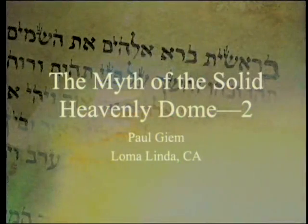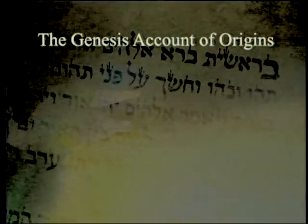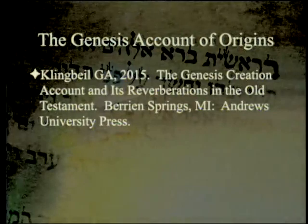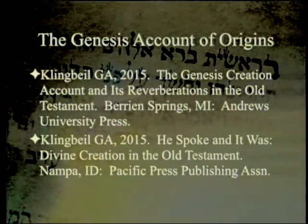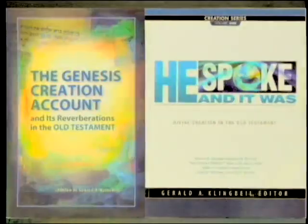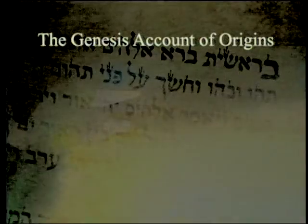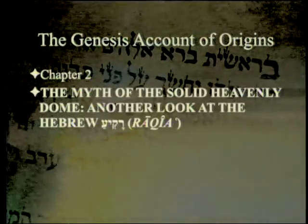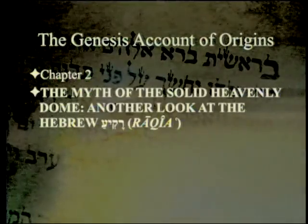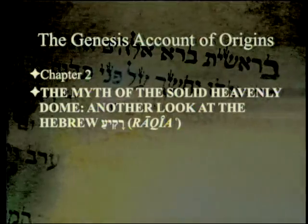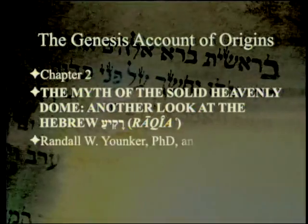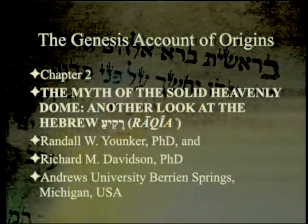The Myth of the Solid Heavenly Dome, Part 2. We've been discussing a couple of books: the Genesis creation account and its reverberations in the Old Testament, and He Spoke and It Was: Divine Creation in the Old Testament, both covering the same ground with the same authors, both edited by Gerald Klingbeil. We are now in chapter 2 — which, because we took the long way around, is going to be our last chapter. This is Part 2 of Chapter 2, 'The Myth of the Solid Heavenly Dome: Another Look at the Hebrew Rakiah,' by Randall Yonker and Richard Davidson of Andrews University.